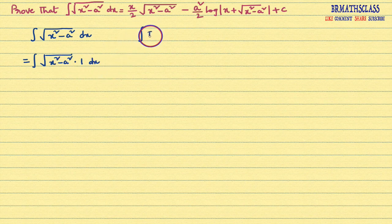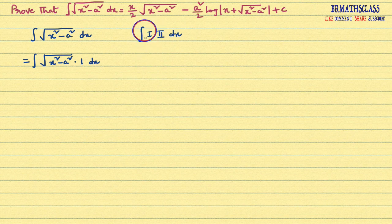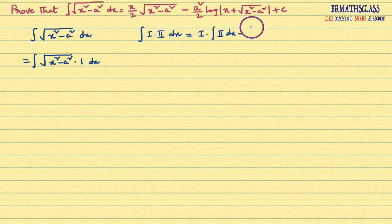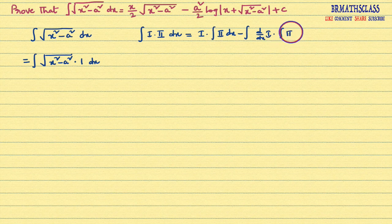What is integration by parts formula? When a product of two functions is there in integration, we use integration by parts. The formula is: integral of first function into second function dx equals first function into integral of second function minus integral of derivative of first function into integral of second function.